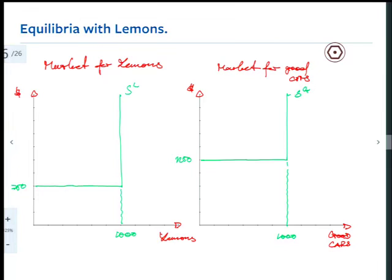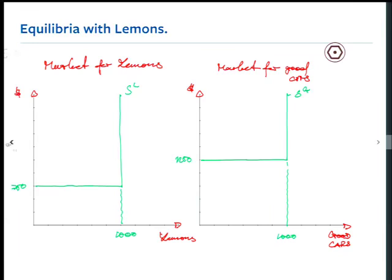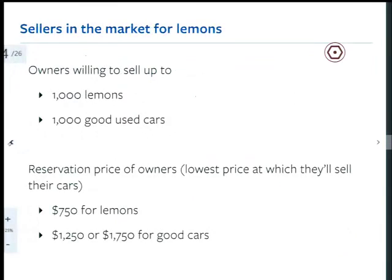We've got the supply side figured out. In the market for lemons, if less than $750 is offered, nothing gets sold; if more than $750, all 1,000 get sold. In the market for good cars, if less than $1,250 is offered, nothing gets sold; if more than $1,250, all 1,000 cars get sold. Now on the demand side: consumers are willing to pay $1,000 for a lemon and $2,000 for a good used car.